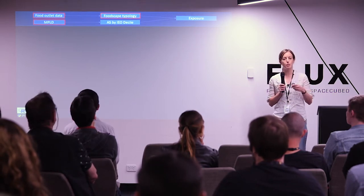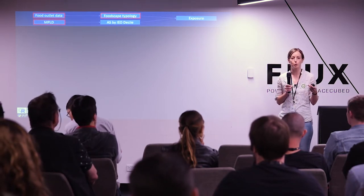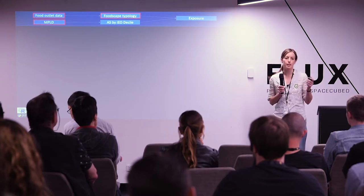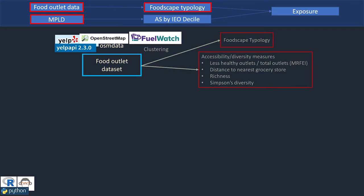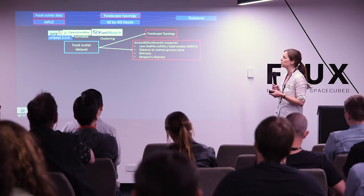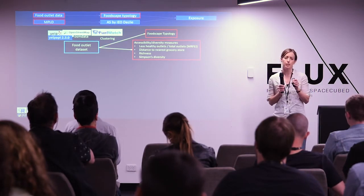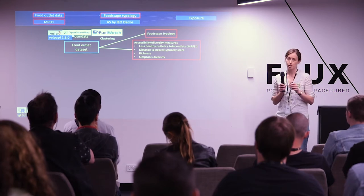So how do we do it? I'll go through the methods quickly. We had to create a food outlet dataset to know what the foodscape looks like in Perth. We did this using data from Yelp, OpenStreetMap, and FuelWatch. Using this, we created a typology of the foodscape to identify zones of differing characteristics across the Perth metro area. We also calculated measures of accessibility and diversity around all mesh blocks in Perth — a polygon provided by the ABS covering about 30 to 60 residential dwellings — which was the resolution we used for the study.